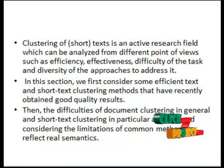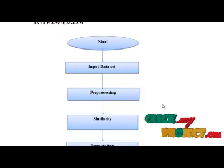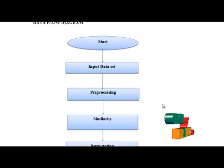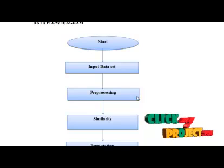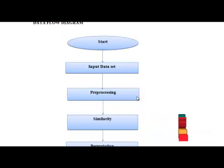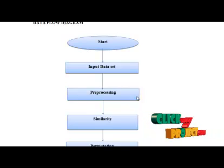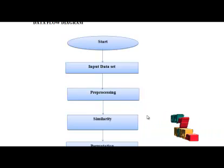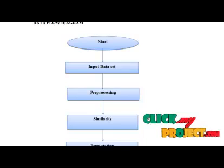In the mutation operation, we implemented the genetic algorithm. We select the input data set and perform pre-processing. In pre-processing we remove the stop words and remove the stemming words. Then we calculate the term frequency and inverse document frequency for calculating the similarity.